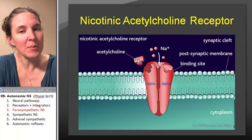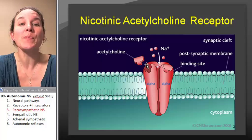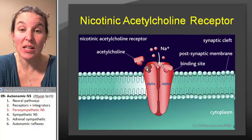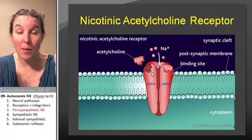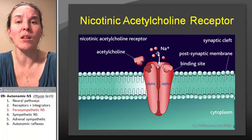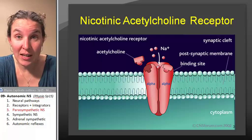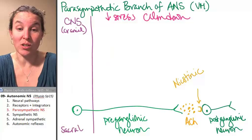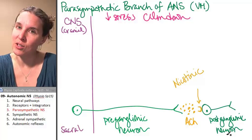So in comes an acetylcholine molecule. If it binds to the nicotinic receptor, it opens up a sodium channel, which is the receptor. The receptor is the sodium channel. Sodium rushes in and creates an action potential in the postganglionic neuron.